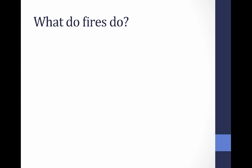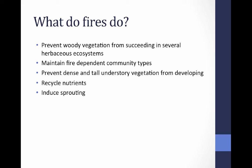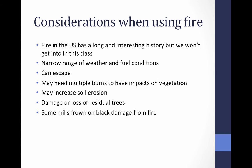What do fires do? They prevent woody vegetation from succeeding in several herbaceous ecosystems — certain plants and ecosystems are really adapted to fire with a short fire return interval. By using prescribed fire, we can maintain fire-dependent community types. Fire can also prevent dense and tall understory vegetation from developing, recycle nutrients, and induce sprouting.